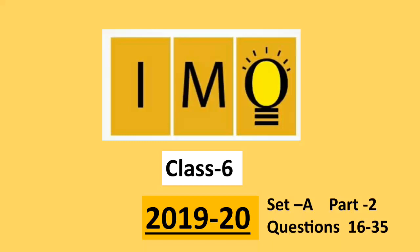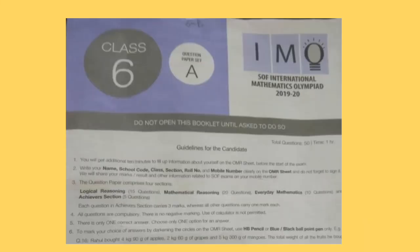Welcome to our channel Olympiad Trainer. Here I am with the question paper of IMO, that is International Mathematics Olympiad exam for Class 6, year 2019-20, Set A. The question paper comprises four sections. We have already solved the first section, Logical Reasoning, in Part 1. The video link is given in the description box. In this video, we are going to solve Mathematical Reasoning. New users, please subscribe our channel Olympiad Trainer for more such solved question papers.